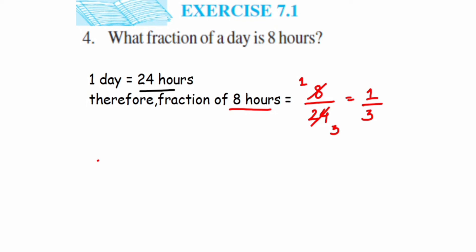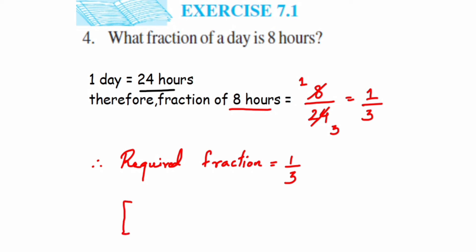The required fraction is 1 upon 3. It's quite a simple problem — in one day we have 24 hours, and they're asking what fraction of a day is 8 hours. Out of 24, 8 hours gives us 8 upon 24, which simplifies to one third.